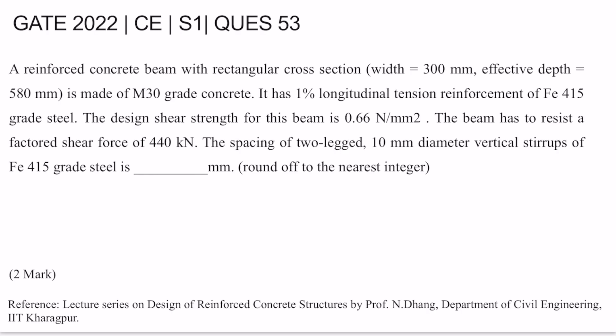Hello everyone, today I'll be covering question number 53 of Set 1, GATE 2022. A reinforced concrete beam with rectangular cross section, width 300 mm, effective depth 580 mm, is made of M30 grade concrete. It has 1% longitudinal tension reinforcement of Fe415 grade steel. The design shear strength for this beam is 0.66 N/mm².